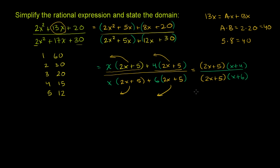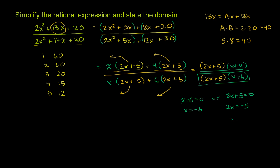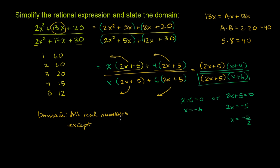The domain is all real numbers except those that make the denominator equal to 0. The denominator equals 0 when x + 6 = 0 or 2x + 5 = 0. From x + 6 = 0, we get x = -6. From 2x + 5 = 0, subtracting 5 and dividing by 2, we get x = -5/2. So the domain is all real numbers except -6 and -5/2.